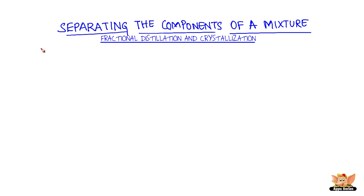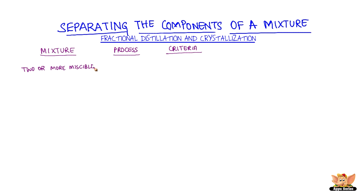Separating the components of a mixture. We had used simple distillation techniques to separate two miscible liquids. How do we separate a mixture containing two or more miscible liquids? We use the process of fractional distillation.